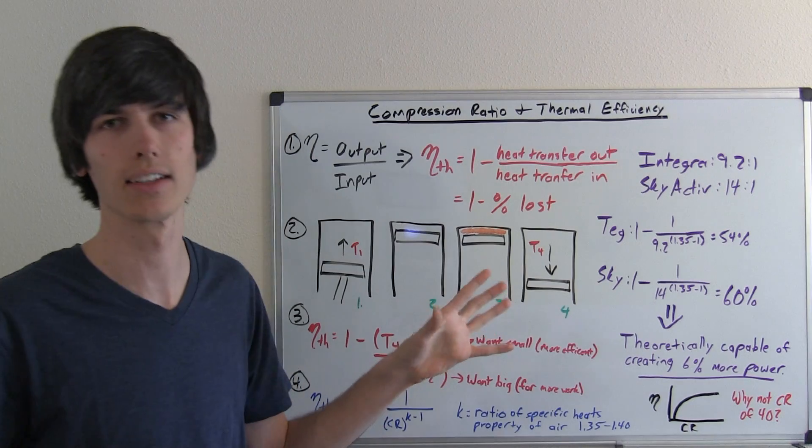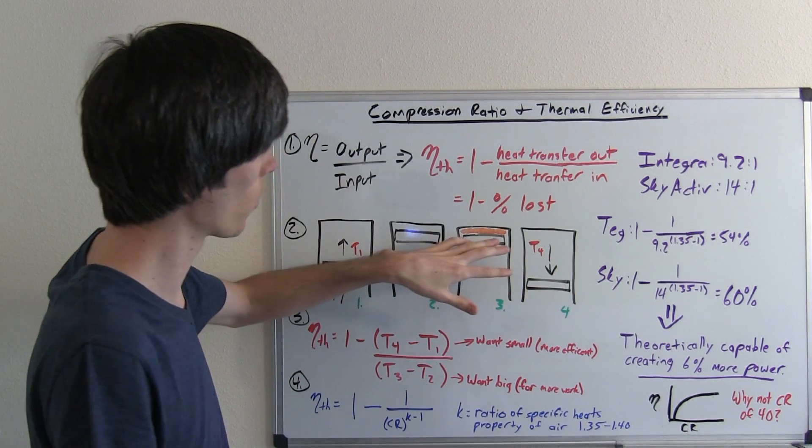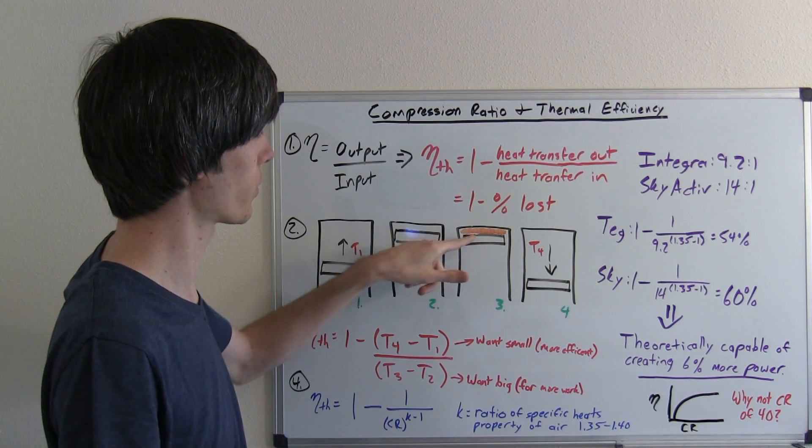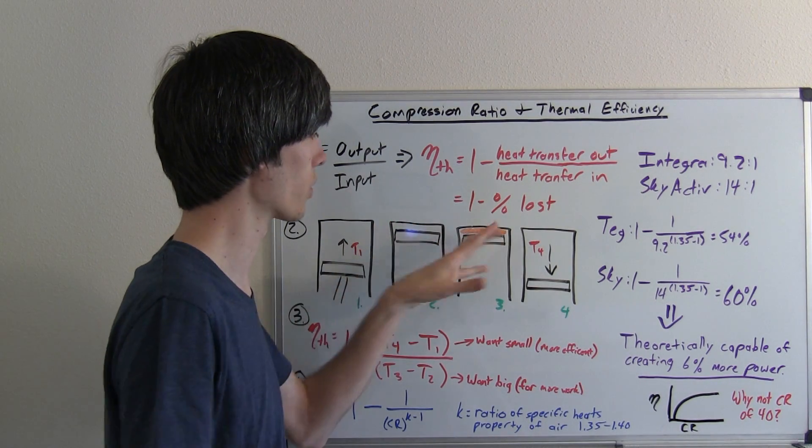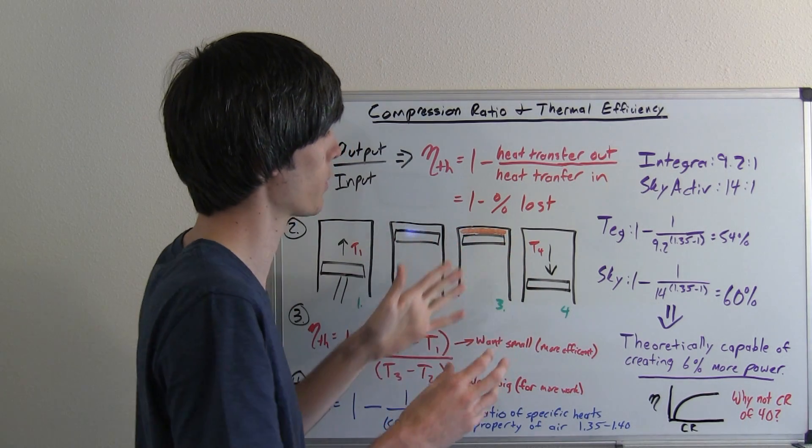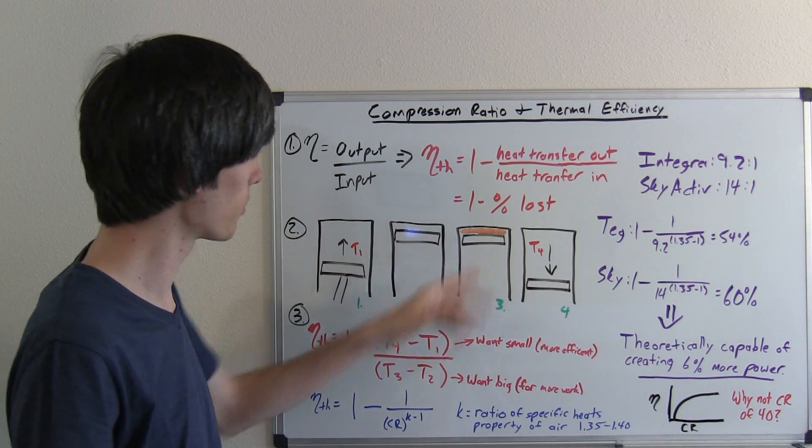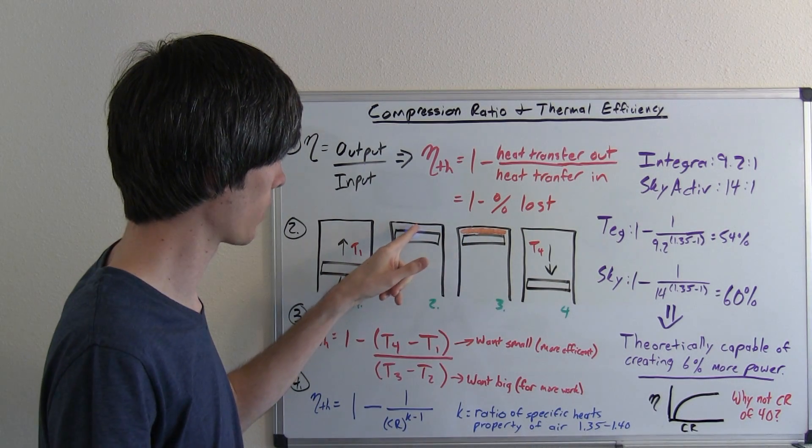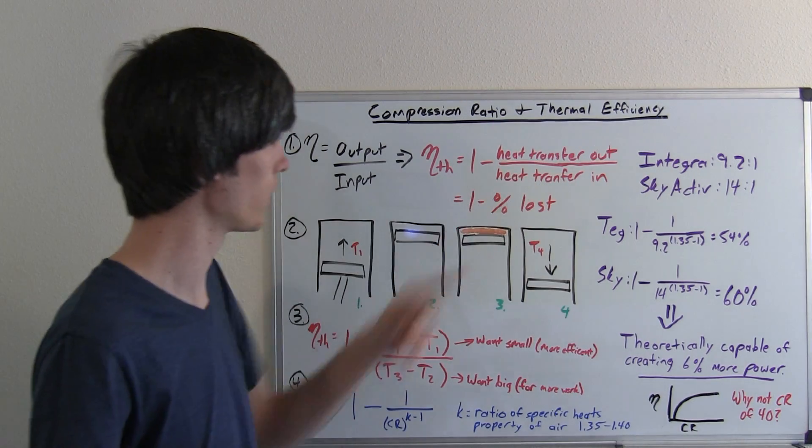Now this is kind of an idealized theoretical equation here where we've got combustion and it goes from no combustion here to complete combustion here where you've got your peak temperatures reached instantaneously. So that temperature minus the temperature before that occurs is the bottom part of this equation, the heat transfer in.